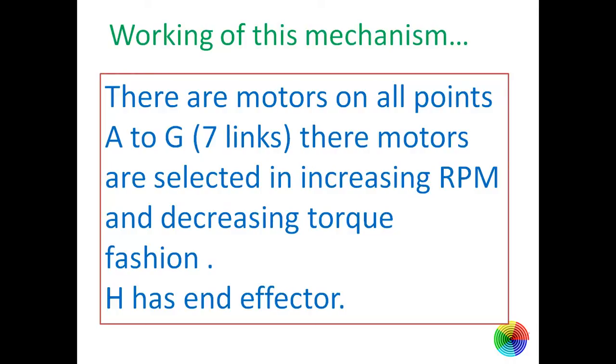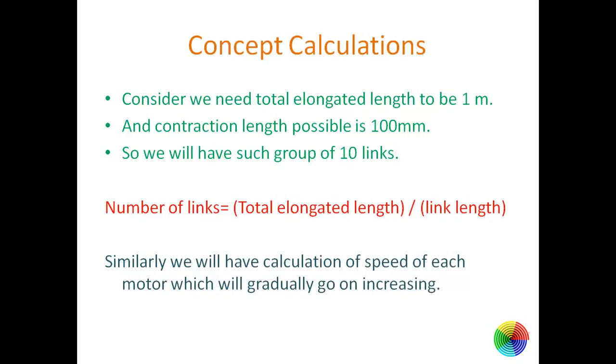Consider we need a total elongation length of one meter and initial link length or contraction length possible is 100 mm. By simple calculation, we will need 10 links each of 100 mm to get elongation of one meter. For any calculation, number of links equals total elongated length divided by link length.